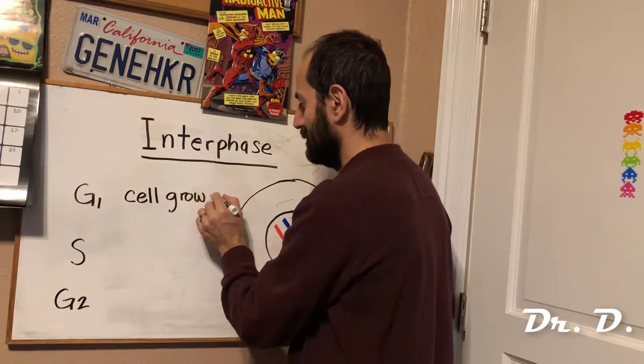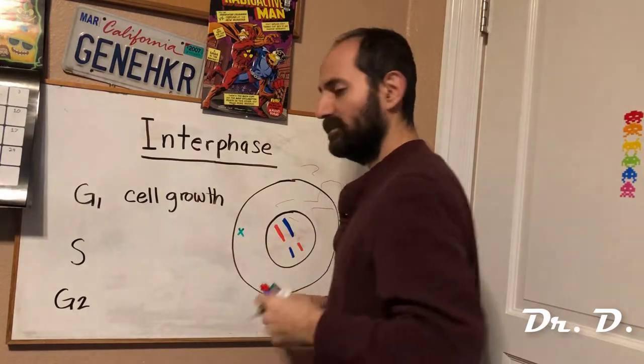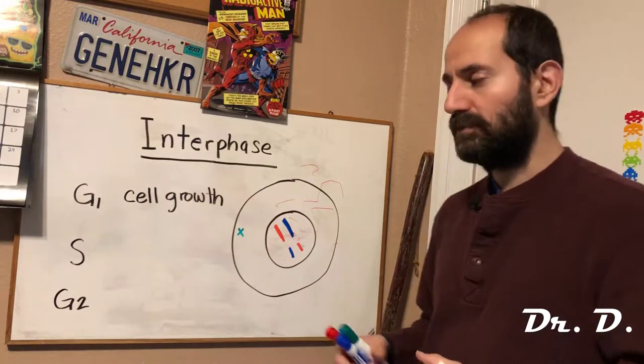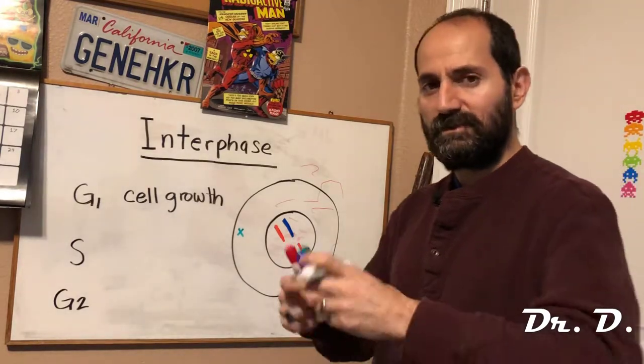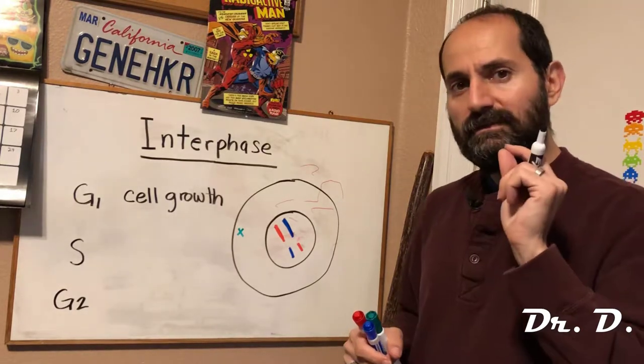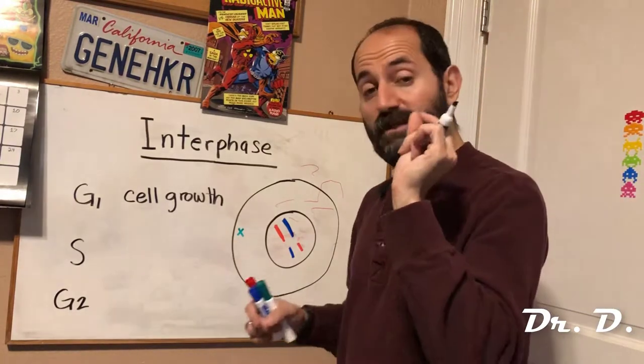The cell is growing. It's producing all the proteins it needs. The organelles are being produced as well. The mitochondria is dividing. It's doing all its cellular duties. And at some point the cell gets the okay to prepare to divide.